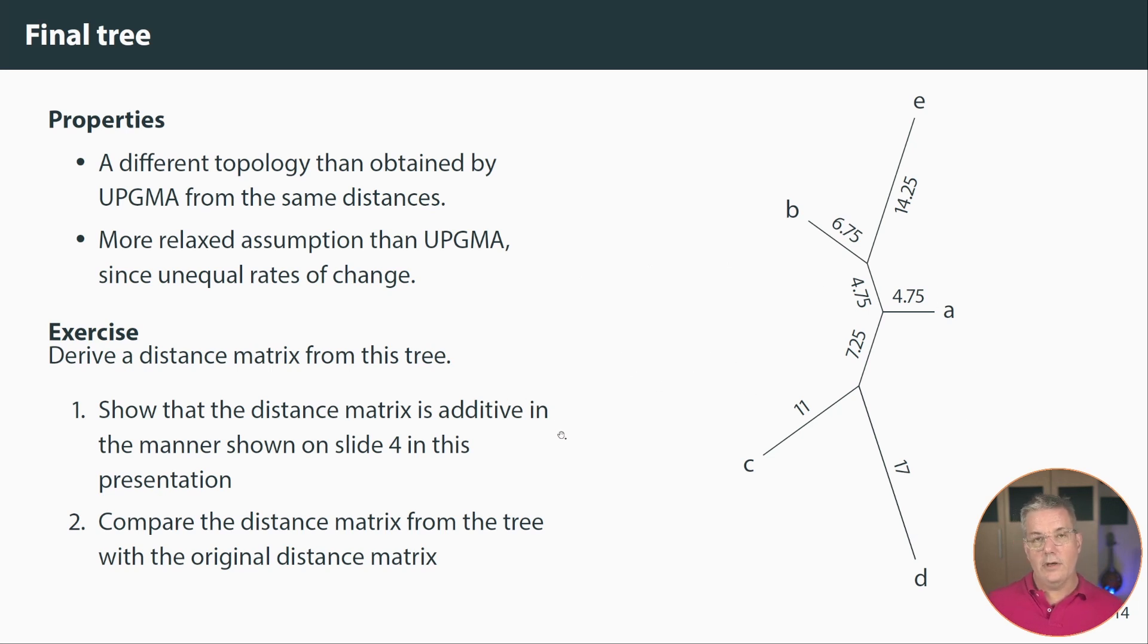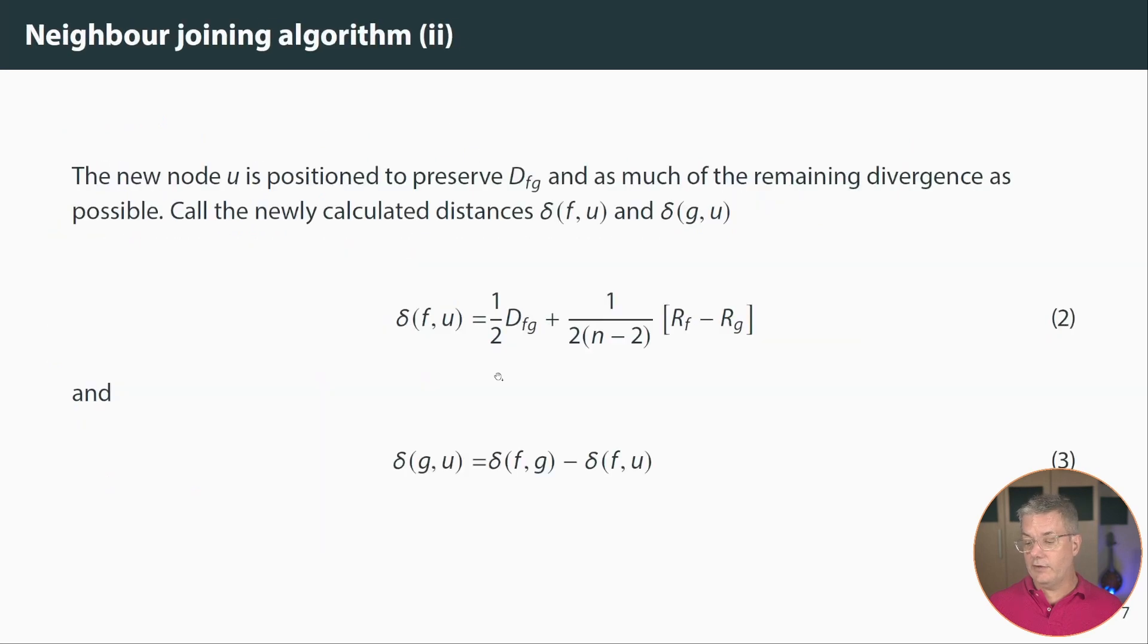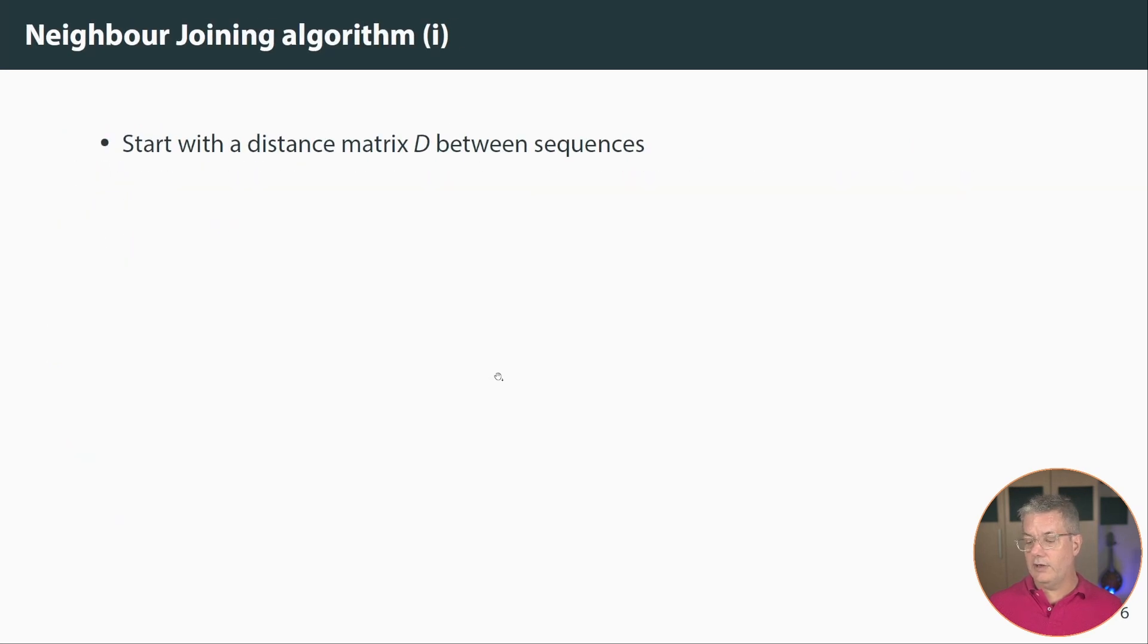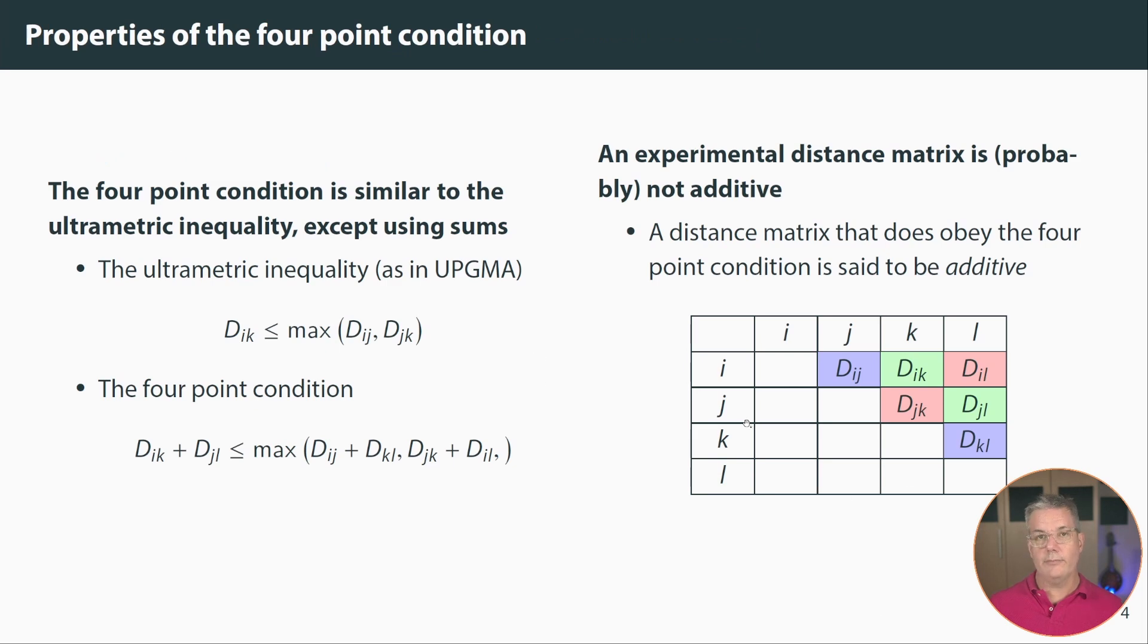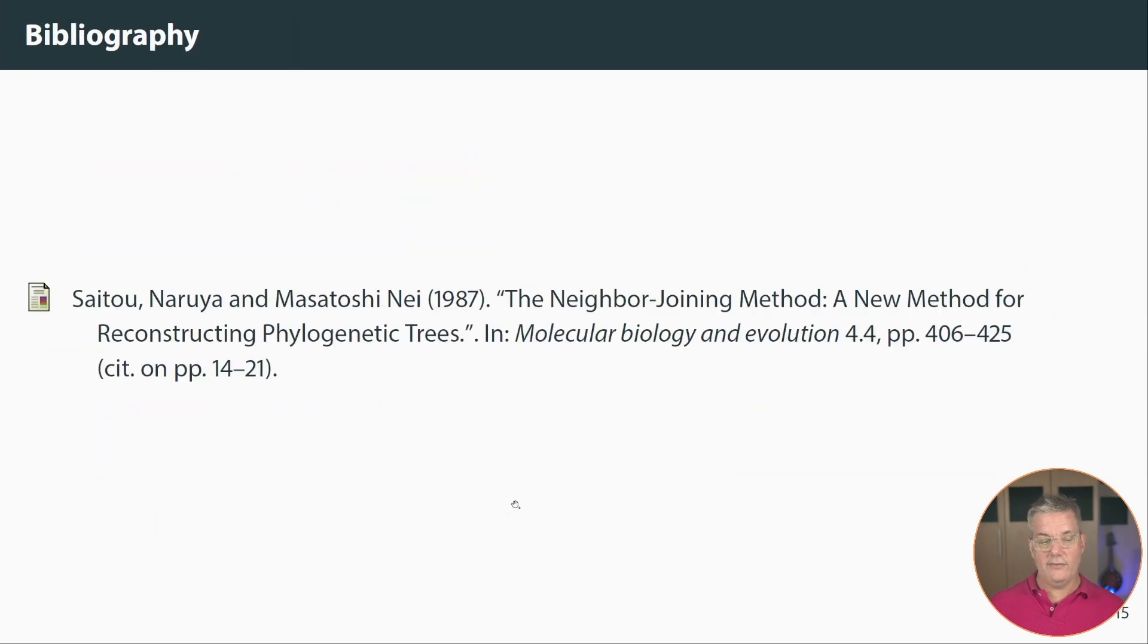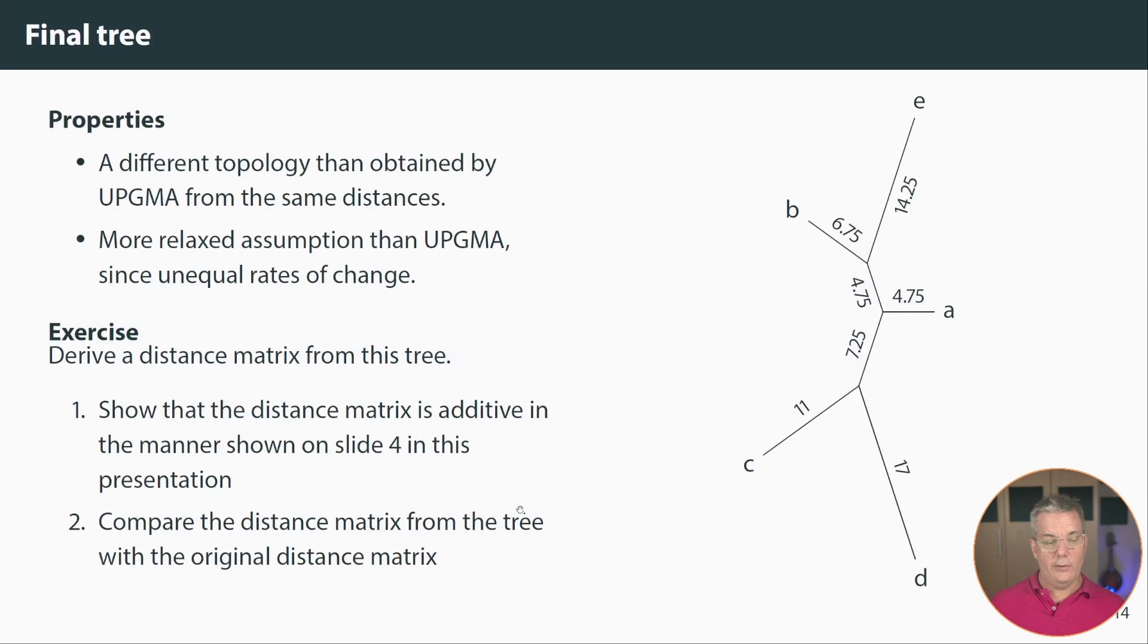Now if you wanted to do a little bit of an exercise for yourself on this, what I would encourage you to do is take this and derive a distance matrix from the tree. Show that that distance matrix is additive in the same way that is shown on this slide. You can see that the matrix is additive and then you can also compare that distance matrix that you get from the tree which is the model to the original distance matrix that was used to input this.